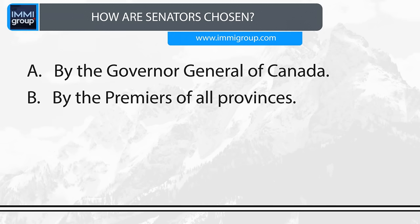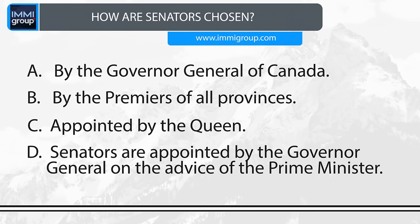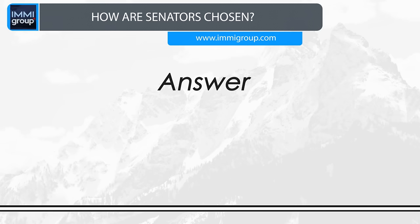How are Senators chosen? A. By the Governor General of Canada. B. By the Premiers of all provinces. C. Appointed by the Queen. D. Senators are appointed by the Governor General on the advice of the Prime Minister. Answer: Senators are appointed by the Governor General on the advice of the Prime Minister.